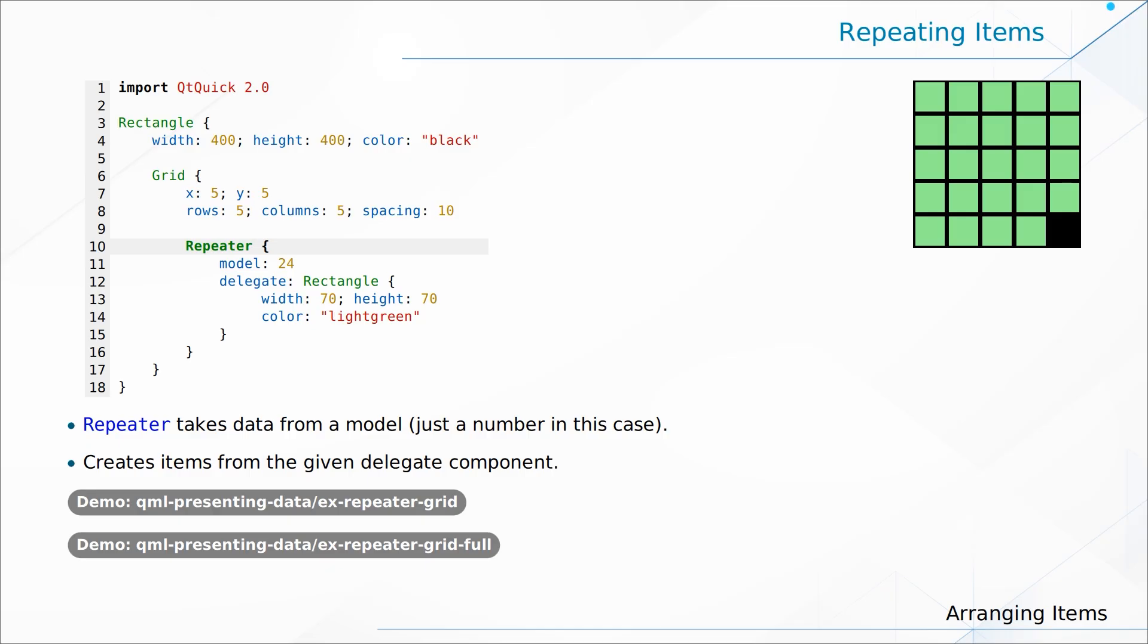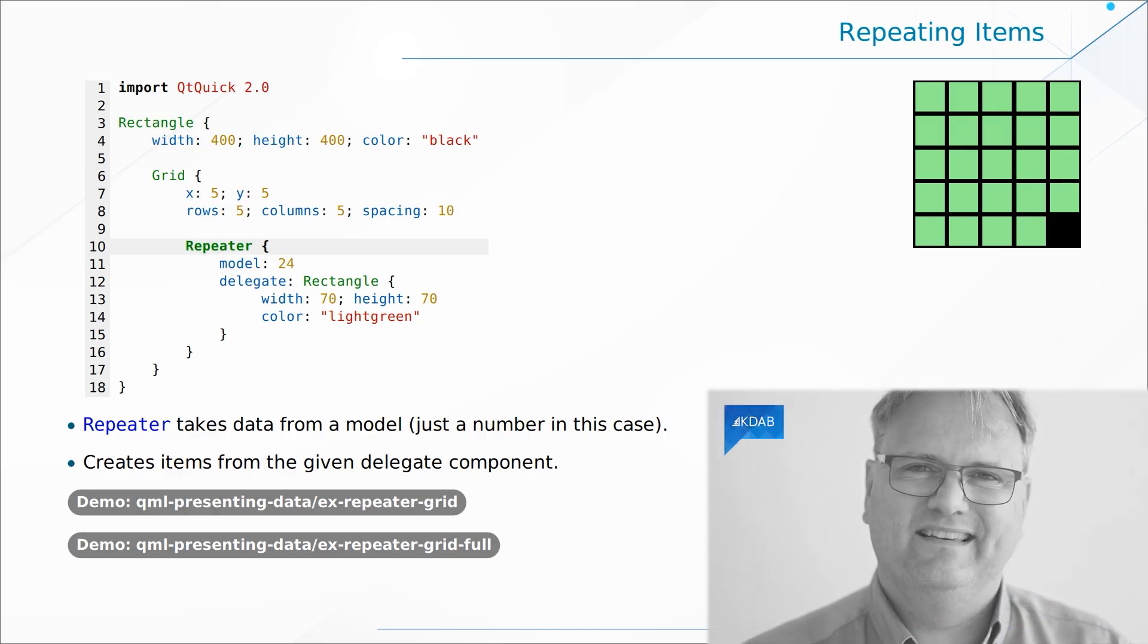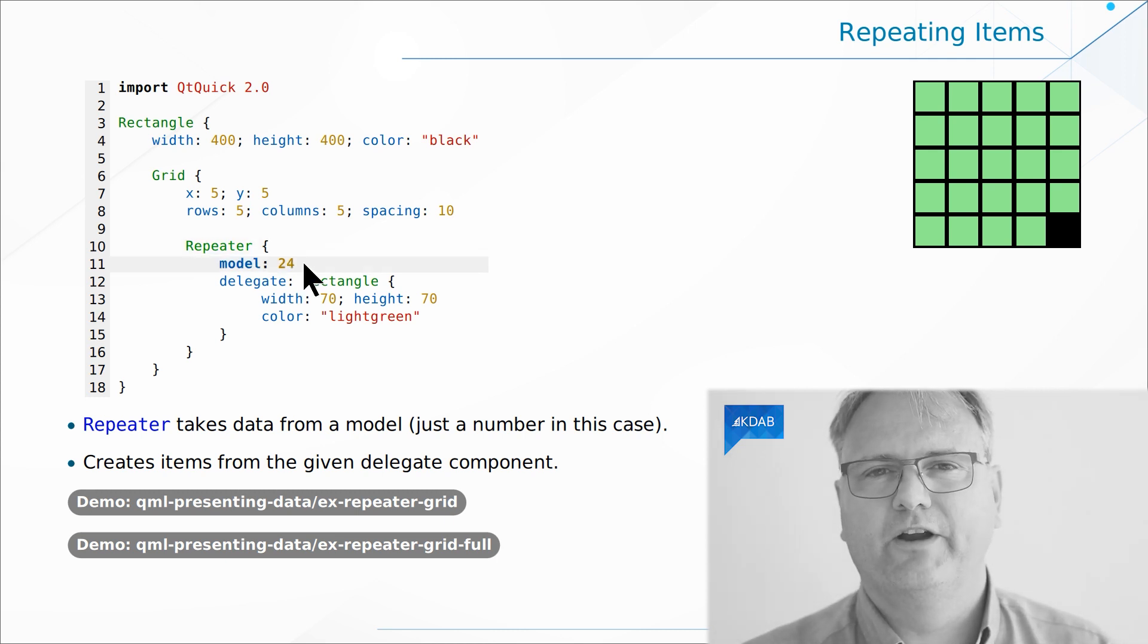The where part we specify using the property called model. And the what does it spit out part using the property delegate. The model in this example is just model colon 24. It's a rather boring model, but we'll see way more complex models as we go on. So, here it's just 24. That is our model. Meaning the delegate, which is what it spits out, should be executed 24 times each time it creates a rectangle 70 by 70. That is light green. You want to count with me? One, two, three, twenty-four. There we are.